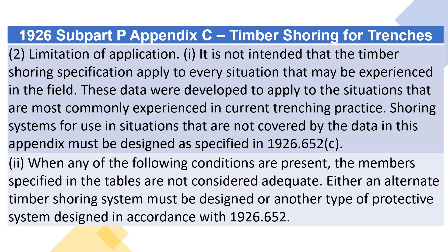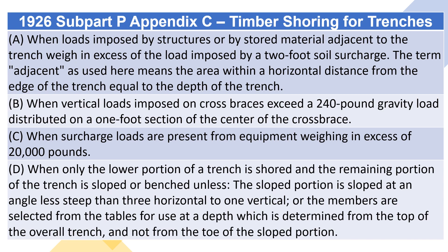2. When any of the following conditions are present, the members specified in the tables are not considered adequate, and either an alternate timber shoring system must be designed or another type of protective system designed in accordance with 1926.652(C)(2). (A) When loads imposed by structures or by stored material adjacent to the trench weigh in excess of the load imposed by a two-foot soil surcharge. The term adjacent as used here means the area within a horizontal distance from the edge of the trench equal to the depth of the trench. (B) When vertical loads imposed on crossbraces exceed a 240-pound gravity load distributed on a one-foot section of the center of the crossbrace.